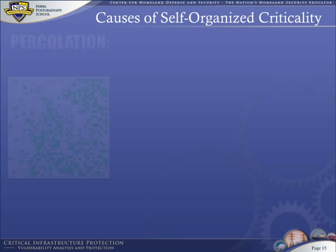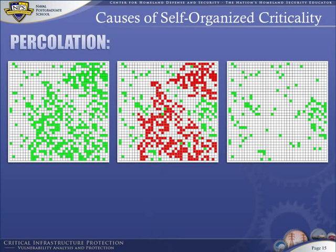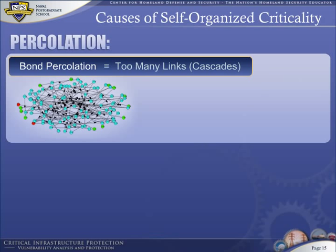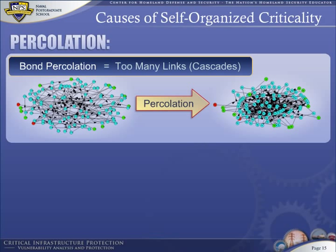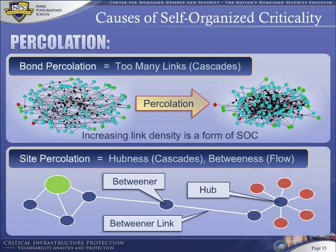We have shown how percolation of trees in a forest leads to high risk and low resilience. The forest fire simulation illustrates site percolation — the increase of cluster size around a certain site in the forest. Another type of percolation is known as bond percolation. In more complex systems, bonds are established by linkages shown as links in a network. Bond percolation in a network is equivalent to increases in density of links — increasing link density is a form of SOC. Networks suffer from site percolation when hubs form or one node or link becomes the dominant betweenness node or link. Too many links or too many paths passing through a node or link are not good for resiliency.